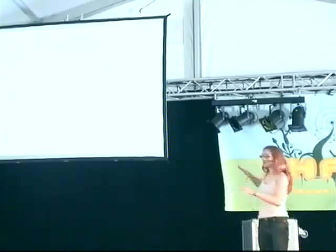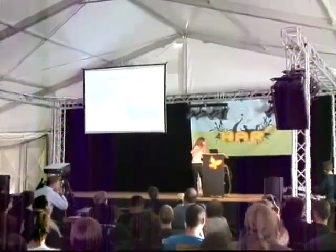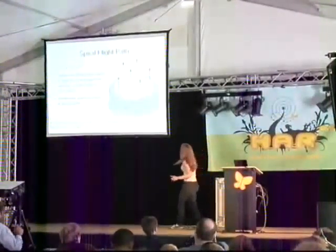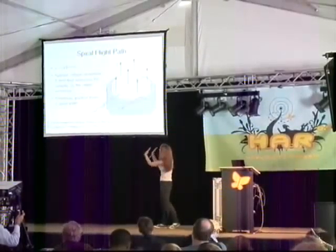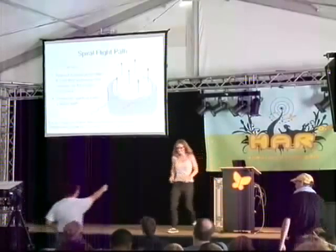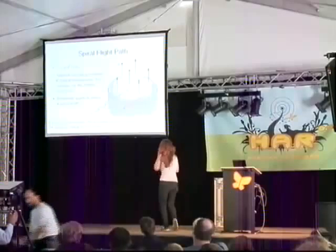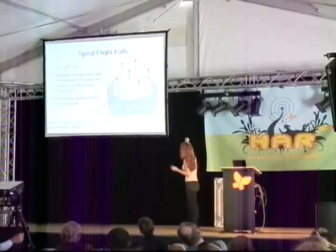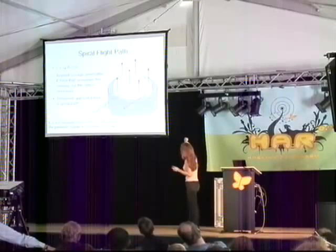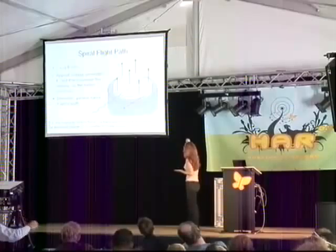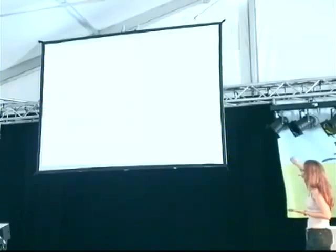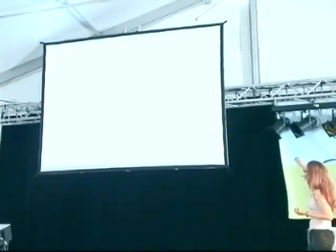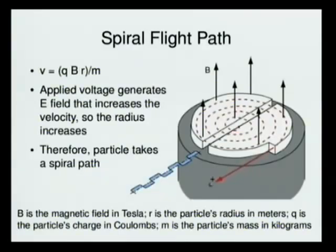You have to switch the electric field back and forth. When the particles are on the lower side of the cyclotron, you want — so you have your particles starting out here, cycling around because of the magnetic field. They end up at this point. Let's say these are electrons: you want to apply a positive voltage here and a negative voltage here to accelerate your electrons across that gap. Then they curve around and end up on the other side. So now you want a positive voltage on this one and a negative voltage on this one to accelerate it again. You see how you have to switch the polarity of the two pieces at every revolution.